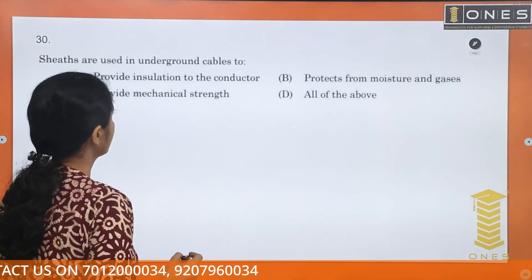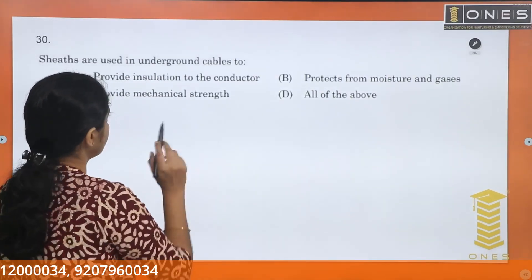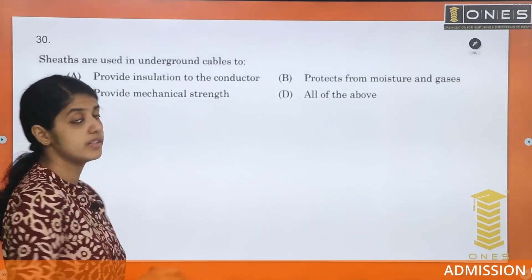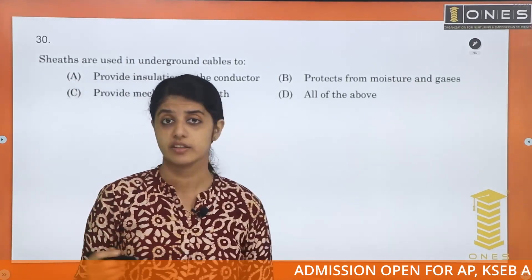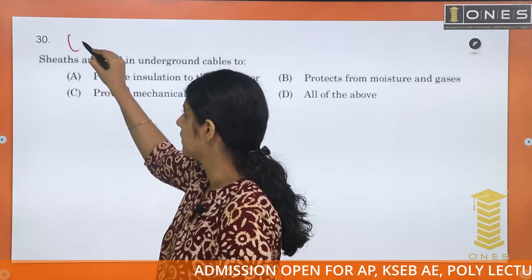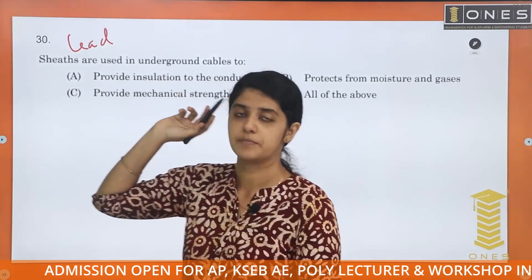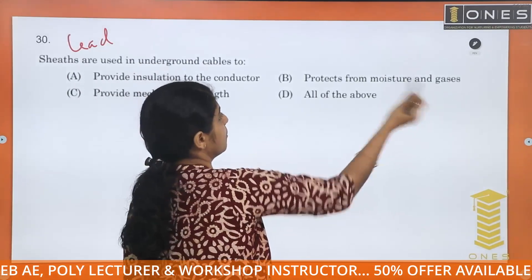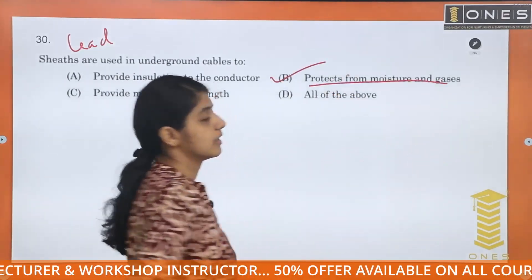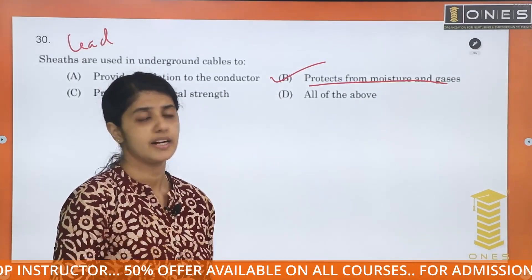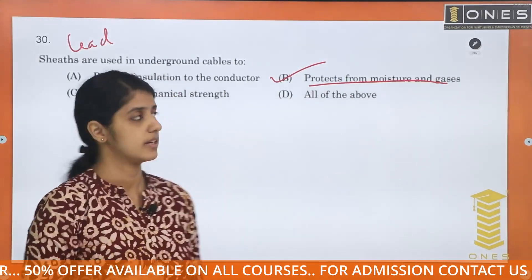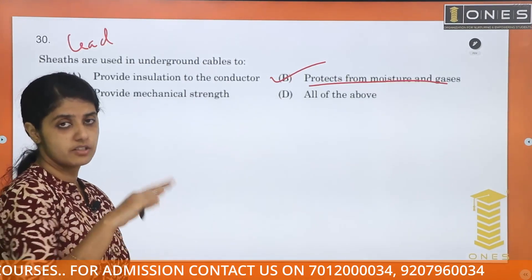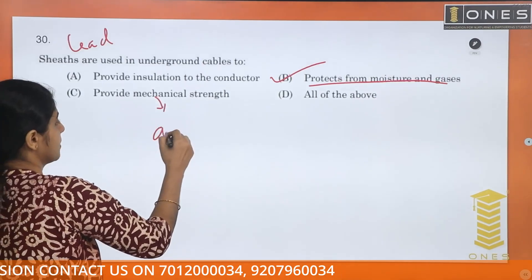Lead sheaths are used in underground cables to provide insulation to conductors, protect from moisture and gases, and provide mechanical strength — all of the above. Lead sheaths prevent moisture from reaching the conductor. The insulation layers and armoring together provide mechanical strength.